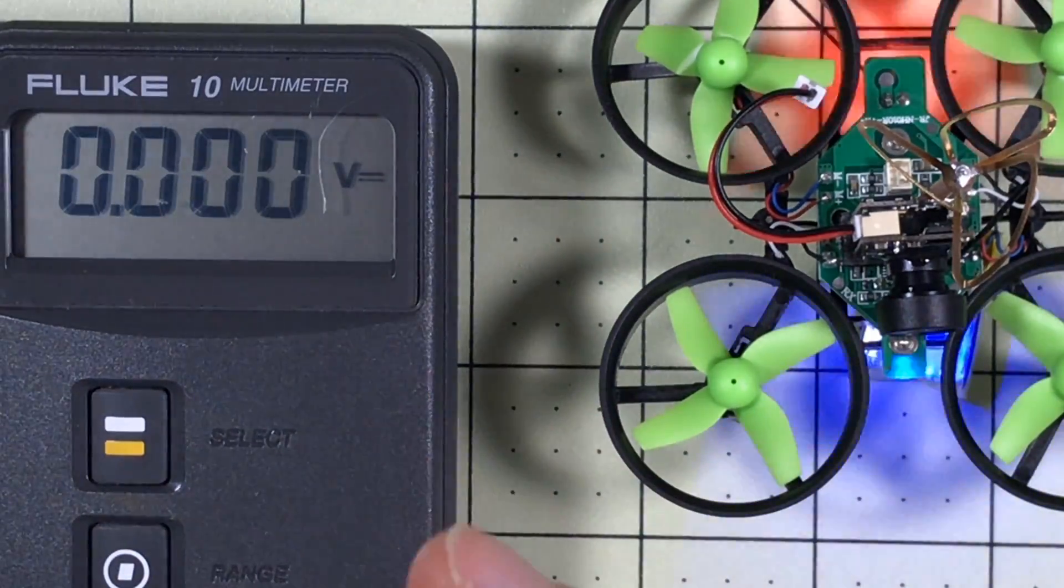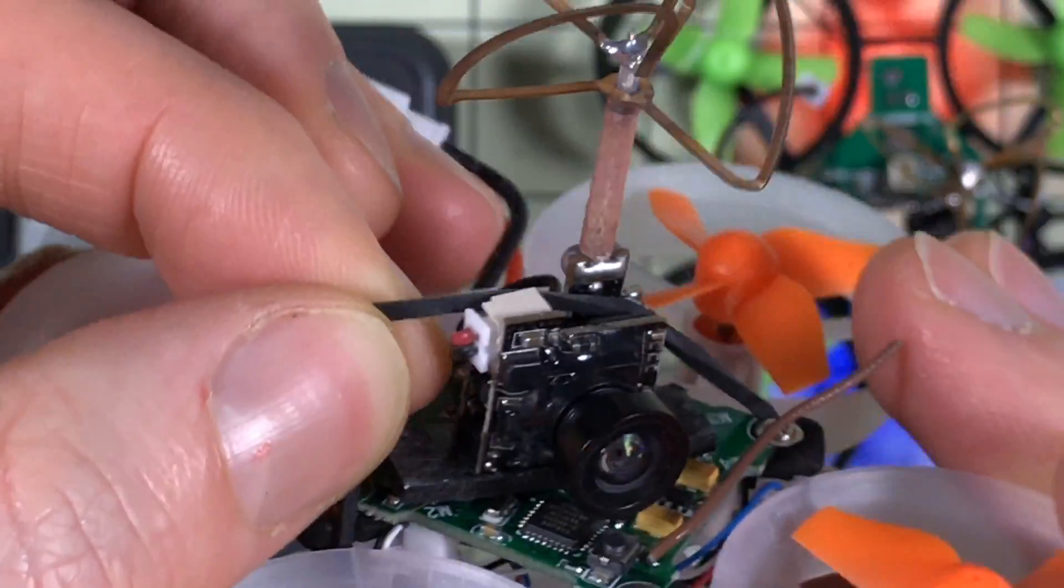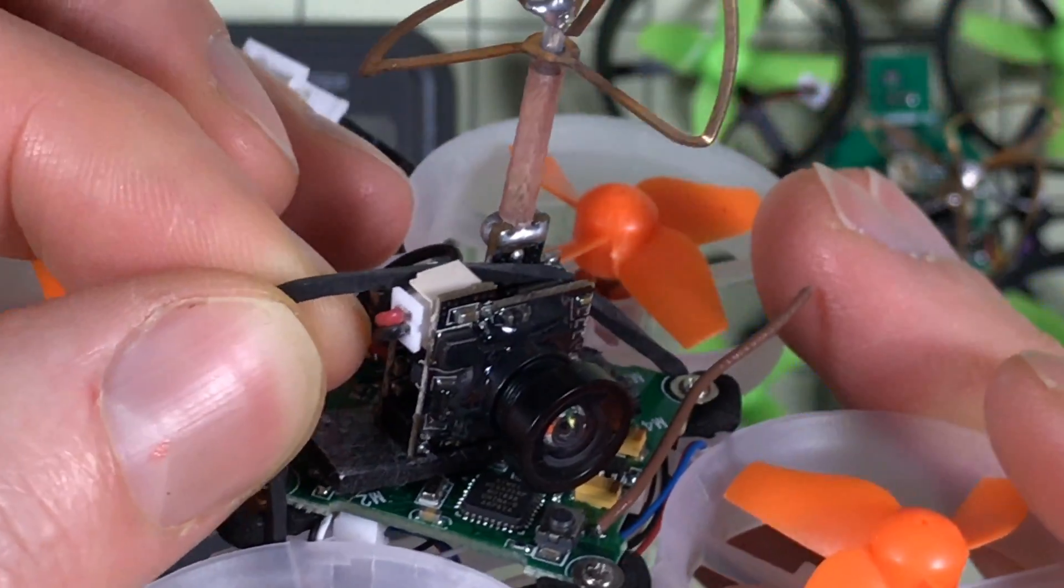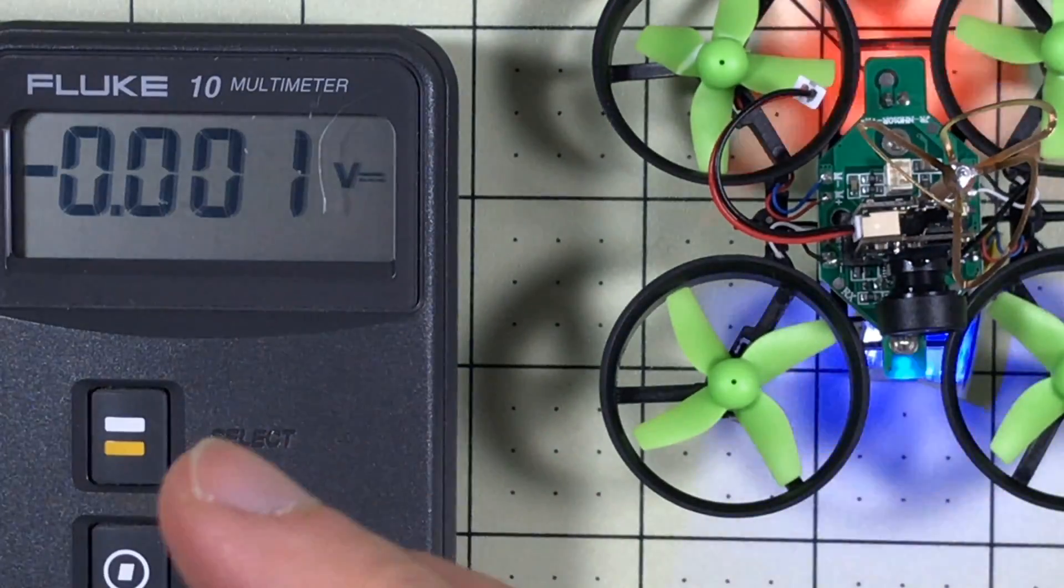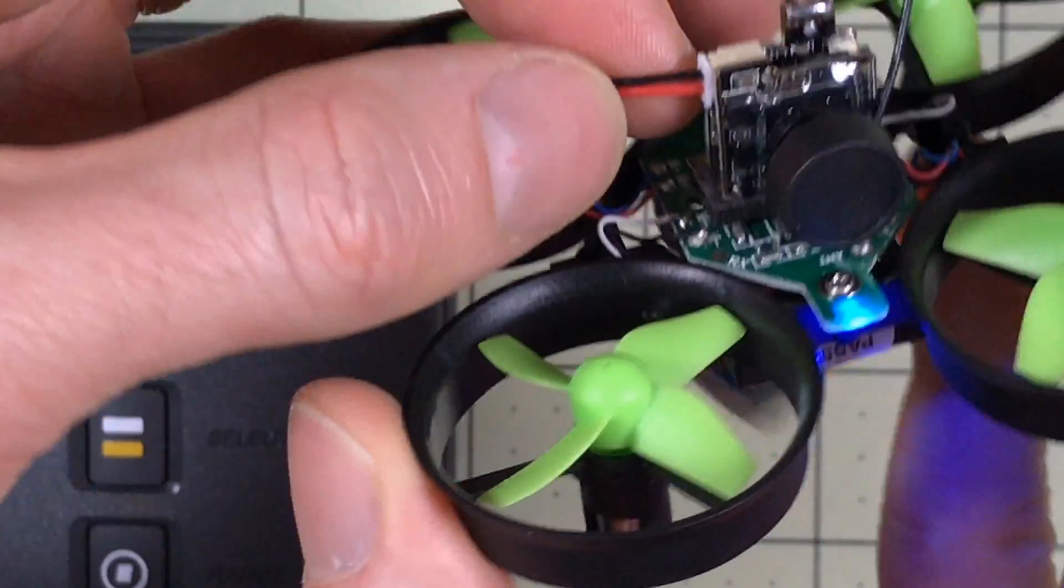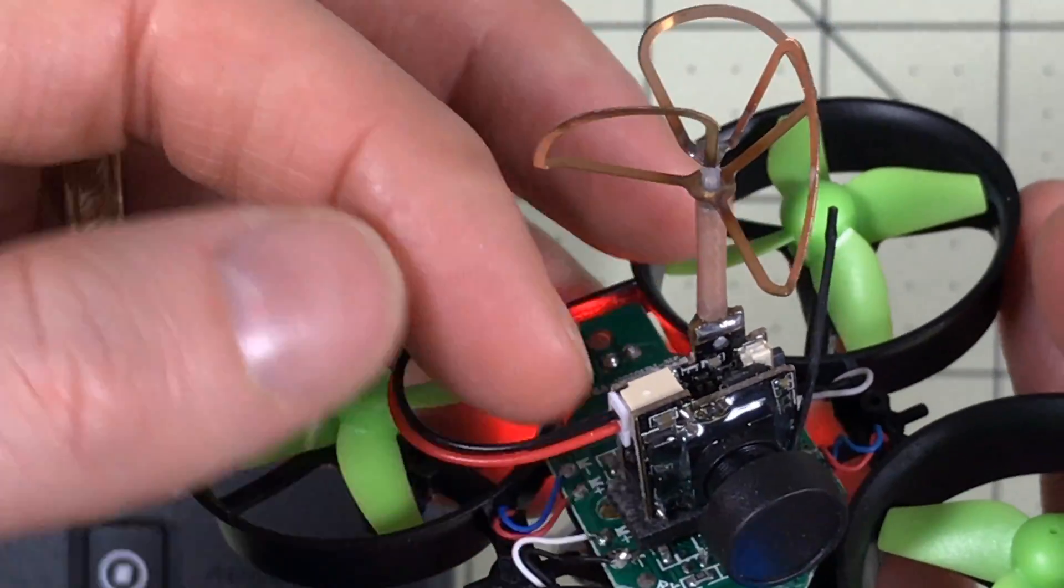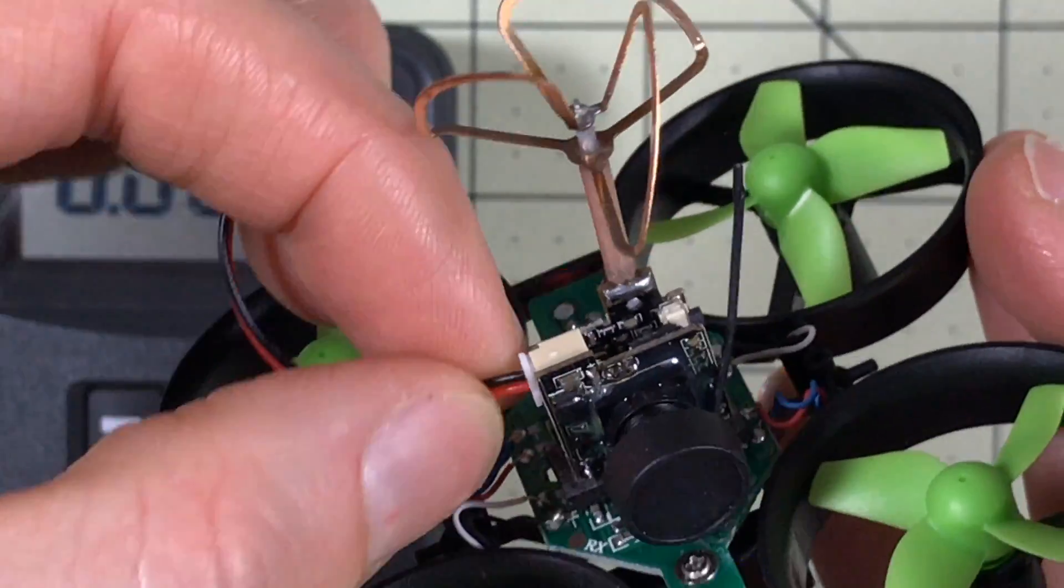If you look here you'll see the red or the positive is on the top. Here's my E10S and you'll see also again the positive on the top.